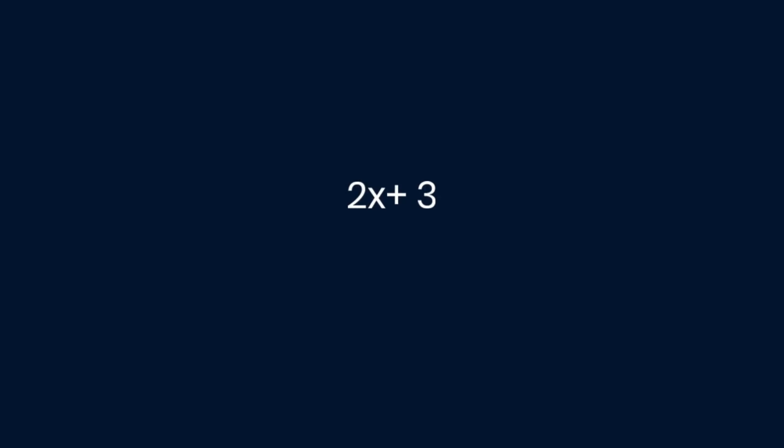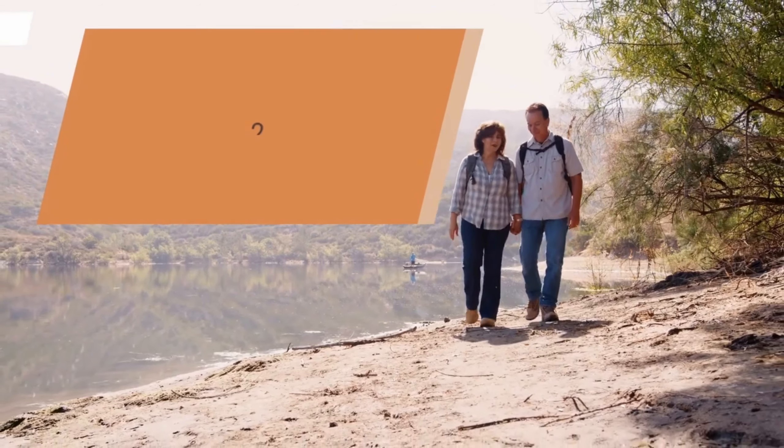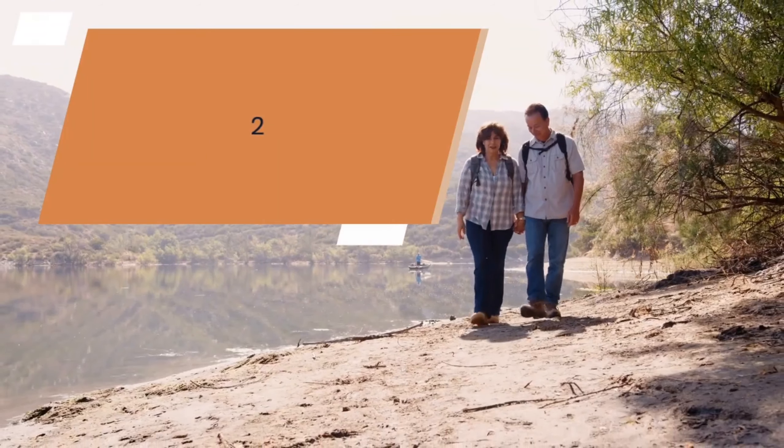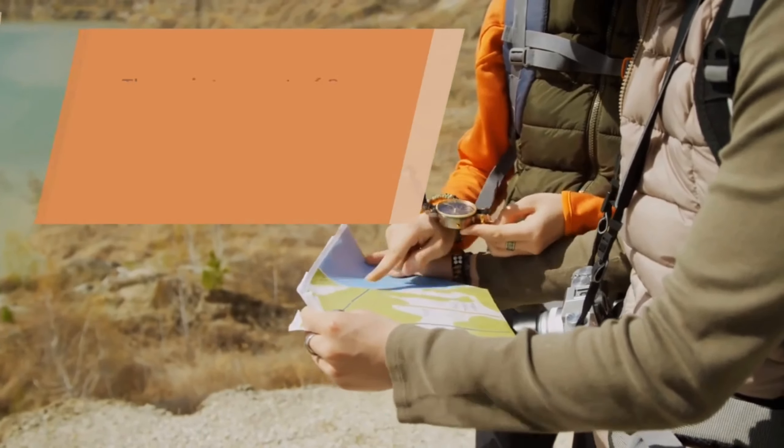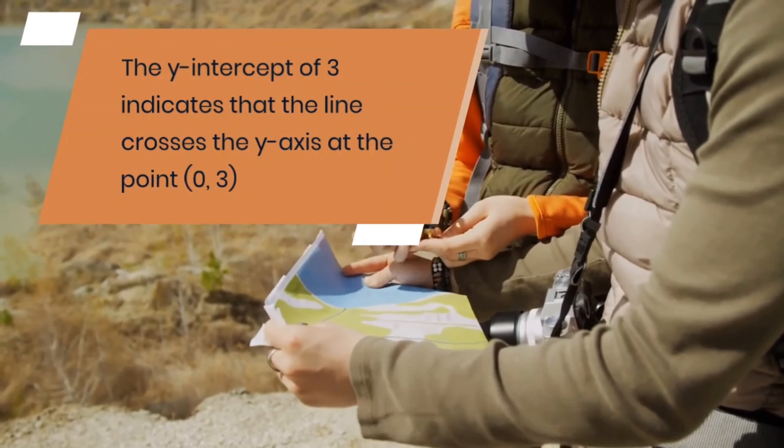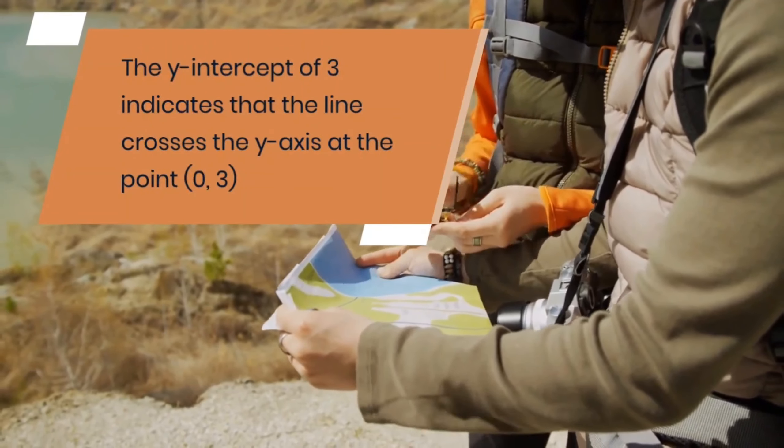Consider the equation y = 2x + 3. Here, the slope m is 2, and the y-intercept b is 3. This implies that for every unit increase in x, y will increase by 2 units. The y-intercept of 3 indicates that the line crosses the y-axis at the point (0, 3).